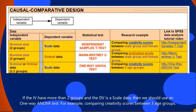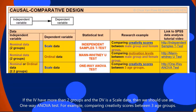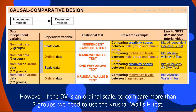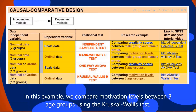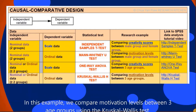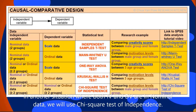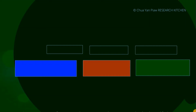If the IV has more than two groups and the DV is scale data, then we should use a one-way ANOVA test — for example, comparing creativity scores between three groups. However, if the DV is ordinal data and we want to compare more than two groups, we need to use the Kruskal-Wallis test. For example, we compare motivation levels between three age groups using the Kruskal-Wallis test. In another situation where both IVs and DVs are nominal data, we use the chi-square test of independence.